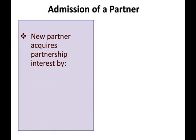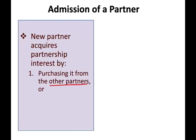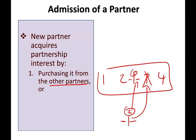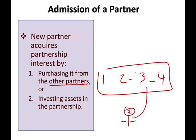We're looking at the admission of a new partner. A new partner can acquire partnership interest in two ways. They can buy the interest from the other partners — for example, if we have a partnership with four individuals, the new person can buy out partner three's entire interest or part of it and replace them. Alternatively, the new partner can invest assets directly into the partnership, joining as a fifth partner.